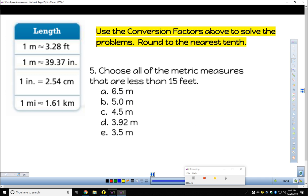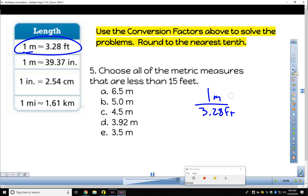One final one here. We're going to choose all of the metric measures here that are less than 15 feet. Maybe we'll do one with you here. We've got 6.5 meters, and I know that 1 meter is 3.28 feet. So 1 meter is 3.28 feet. 6.5 meters. Multiply that by 6.5. So then here I must also multiply by 6.5.